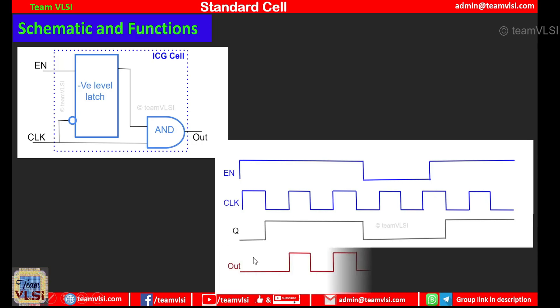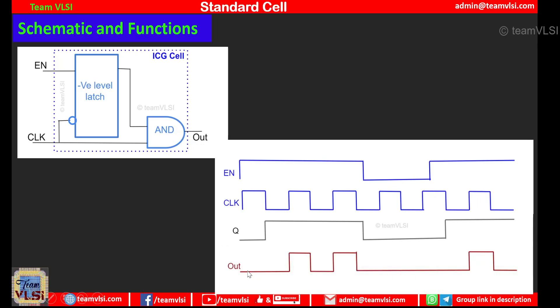And the final output which we get from this AND gate will be the ANDing of this Q and this clock signal. And from here you can see that it is completely glitch free. So this configuration is widely used in ICG cell. There could be different architectures of this ICG cell but one of the simplest and most popular architecture is this one.